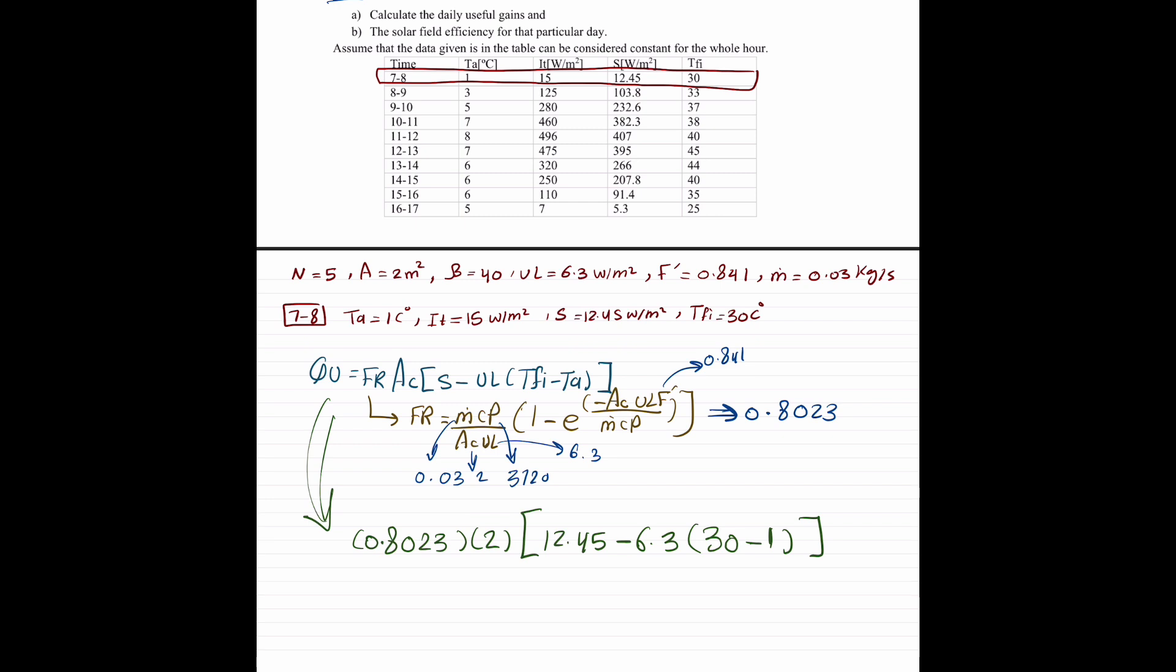And then TFI is 30 minus T ambient 1. Plug that in the calculator. We're going to get a value of negative 273.18.